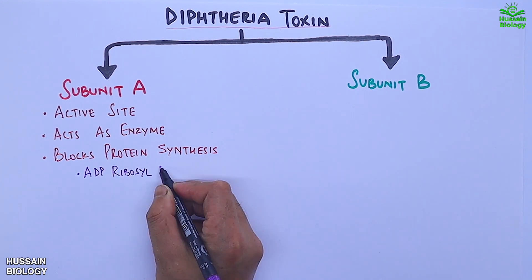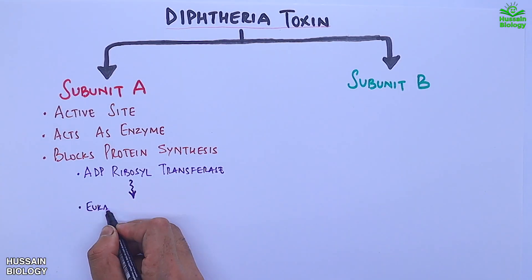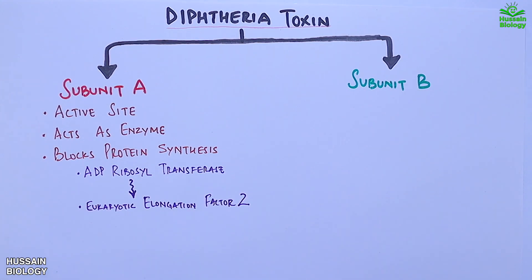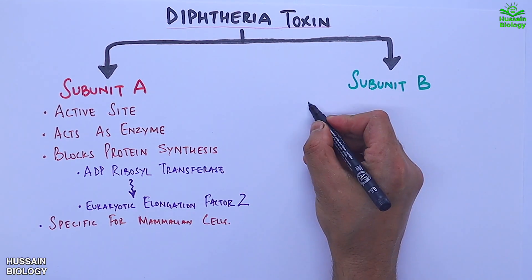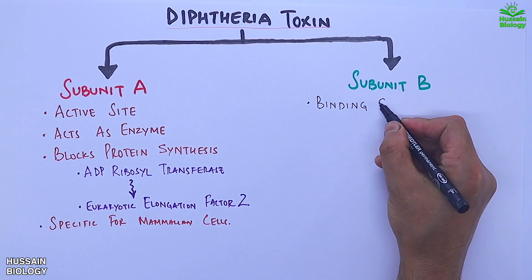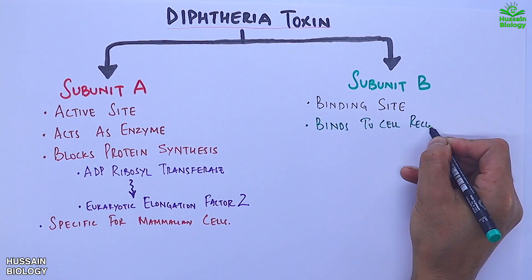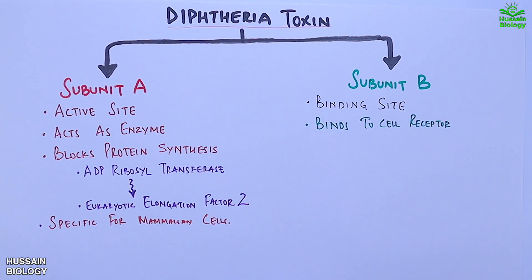Subunit A acts as an ADP-ribosyl transferase enzyme and inhibits the eukaryotic elongation factor 2 (EF-2). Subunit B is the binding site for the toxin; it helps in binding the toxin to the cell receptor.